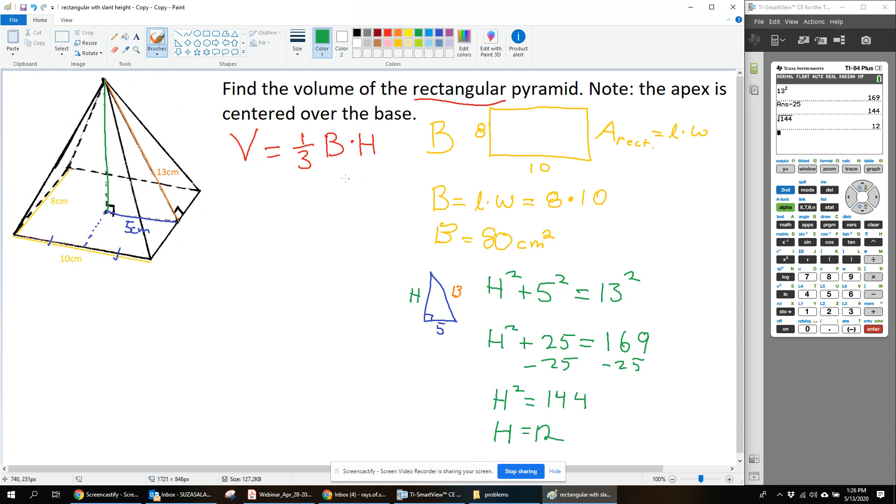Now I can plug my pieces in. h is 12, and then I bring down the rest of my formula: volume equals 1/3 times 80 times 12.